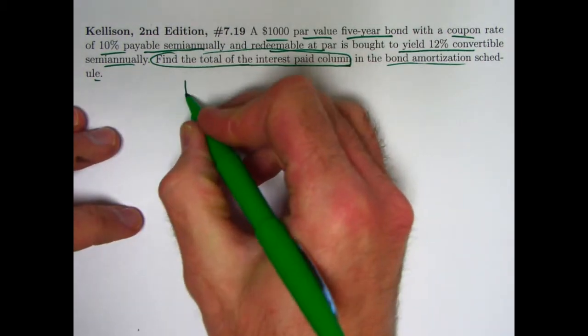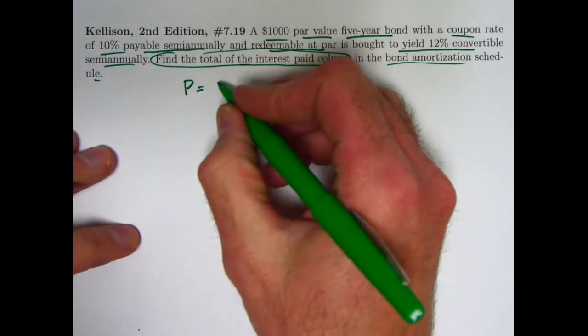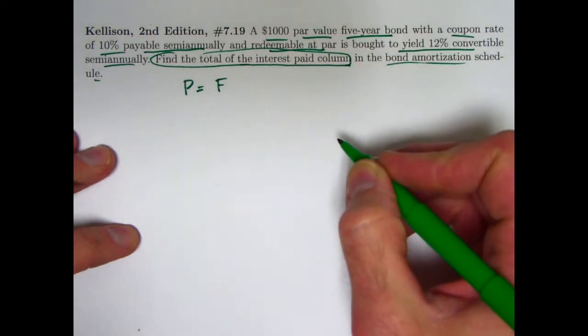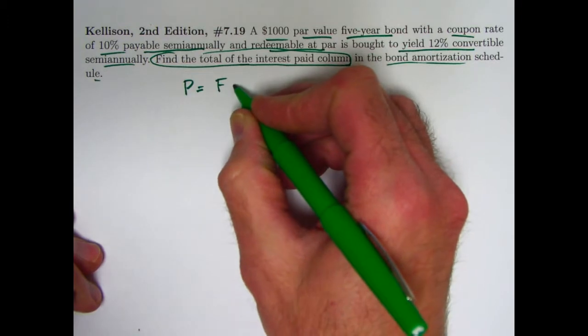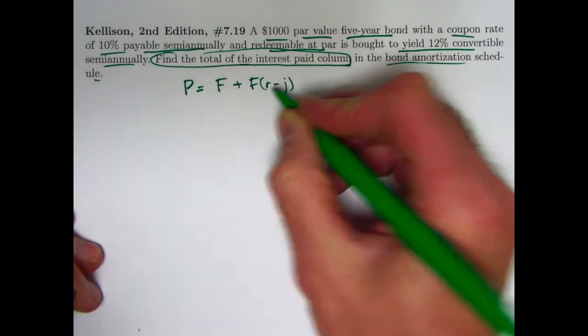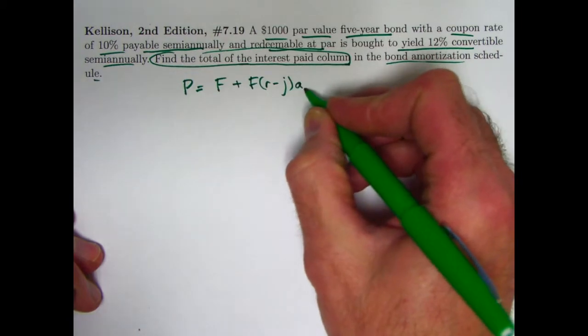But first we need to find the price of the bond. Now you certainly can use the basic formula to find the price of the bond, but we've been using the premium discount formula recently. I will reuse that again here, both to emphasize its use and to illustrate in the end why the intuitive conceptual approach is equivalent to a more difficult algebraic approach. Also, when the bond is redeemable at par, as it is here, we can use the face value in this formula. So we wrote the formula as the face value plus the face value times the quantity r minus j, where r is the semiannual coupon rate and j is the semiannual yield rate times a_n at j.